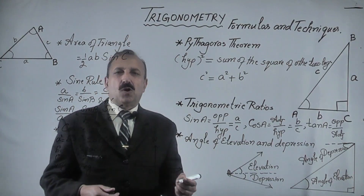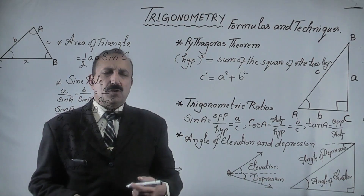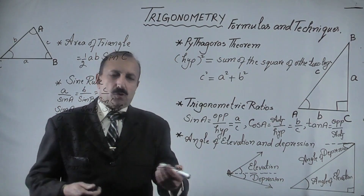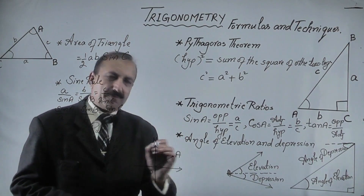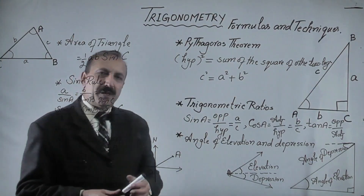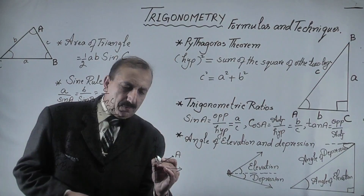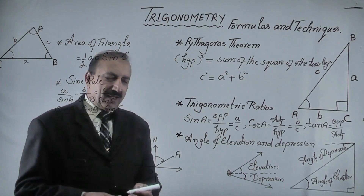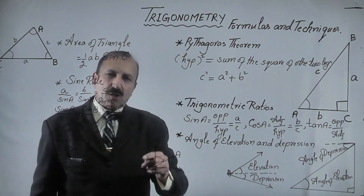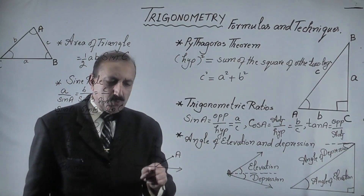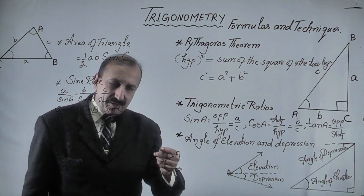This bearing is always written in three digits, even if the bearing number has only one or two digits. For example, if there is a point A, we say: what is the bearing of A from O? It means we are supposed to find the angle made by the line from A to O with the north. If the north is already in the figure at the point where we need to find bearing, we mention the angle and calculate it.